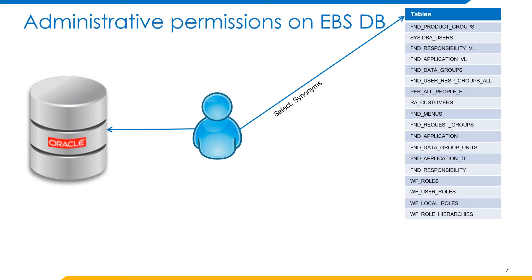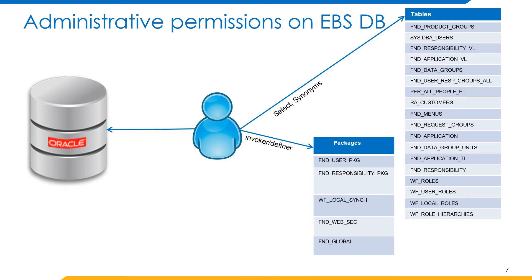For administrative permissions for provisioning accounts, provide permissions for the relevant packages based on Definer or invoker rights. If the packages have Definer rights, the procedure executes with the privileges of the owner. Invoker rights procedures execute with the privileges of the current user — that is, the user who invokes the procedure. If the packages have invoker rights, copy the package scripts from the IdentityIQ integration Oracle eBusiness Suite resource directory to the EBS Oracle Home database site, and as the apps user, grant execute on the relevant packages to the new user.